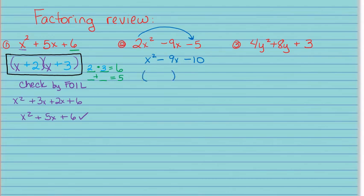I know it's going to factor into binomials with an x and x, but since I multiplied the 2 times the 5, I'm going to have to divide by 2 when I'm done. Now I need two numbers that multiply to give me negative 10 and add to give me negative 9 — that's going to be negative 10 and positive 1.